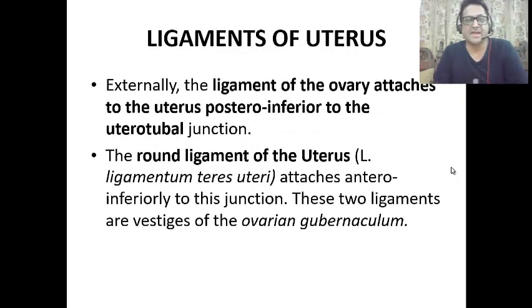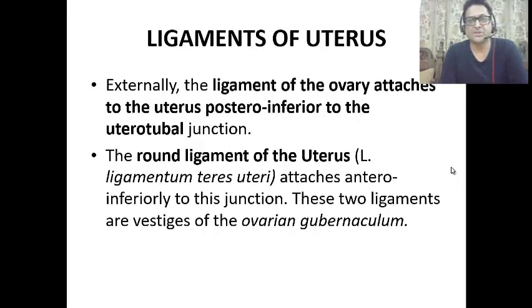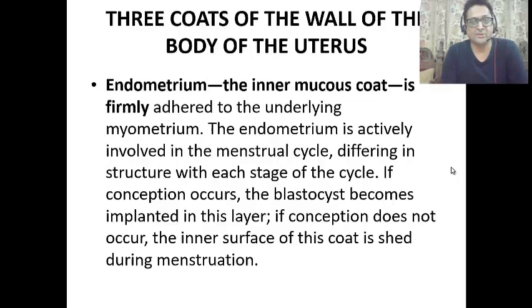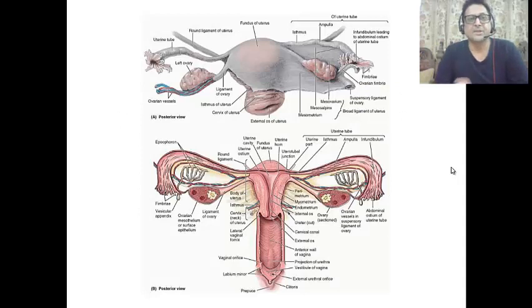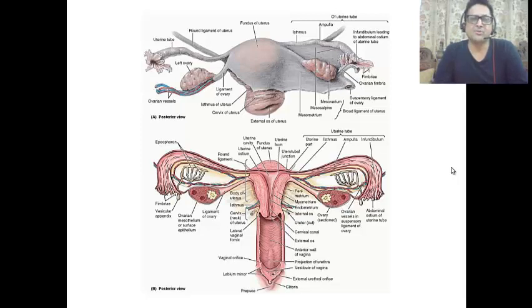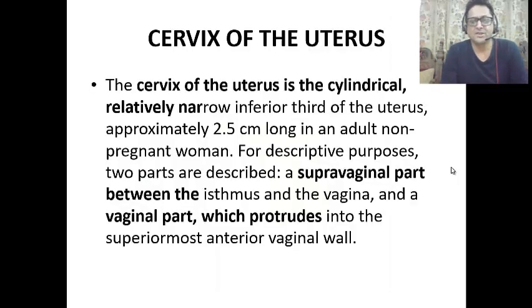The ligaments of the uterus include the ligament of the ovary and the round ligament of the uterus. Both of these ligaments are attached to the uterus, as seen in the diagram.